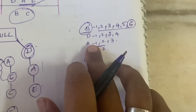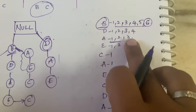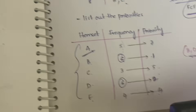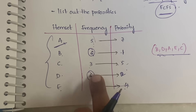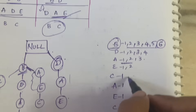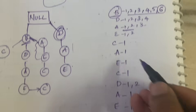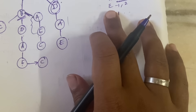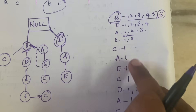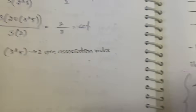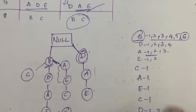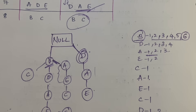Let us check the same for D as well. Count all occurrences of D in the tree: they add up to 6, and the frequency of D in the question is also 6 — correct. For A, all occurrence counts add up to 5, and the frequency of A is 5 — correct. For E, all occurrences add up to 4, and the frequency of E is 4. This count must match the frequency given in the question.